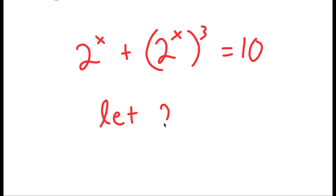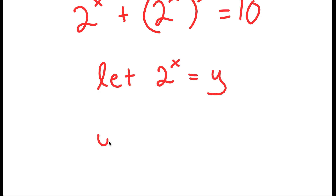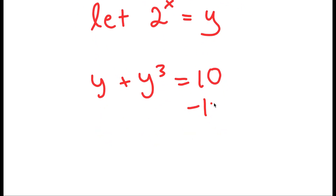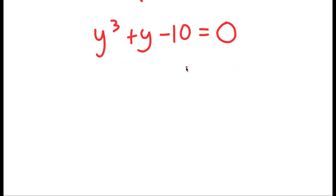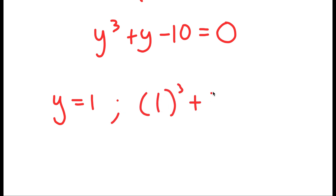Now I'm going to let 2 to the power of x equal the variable y. So I get y plus y to the power of 3 is equal to 10. Subtracting 10 on both sides, I get y cubed plus y minus 10 is equal to 0. To solve this, I need to first find one solution of y by testing values. Starting with y equals 1: 1 cubed plus 1 minus 10 equals 1 plus 1 minus 10, which is negative 8, which does not equal 0. So y equals 1 does not work.